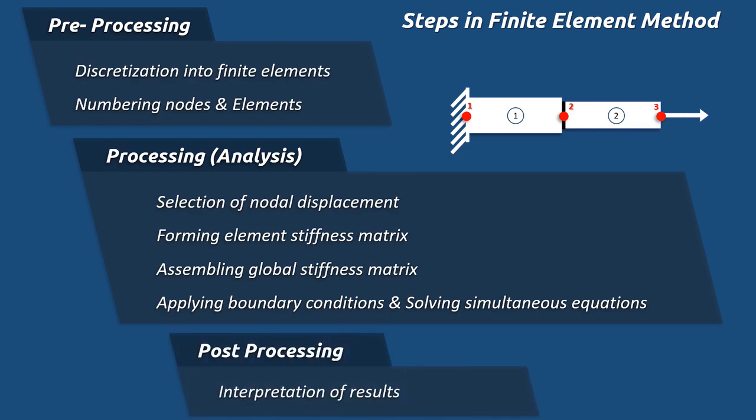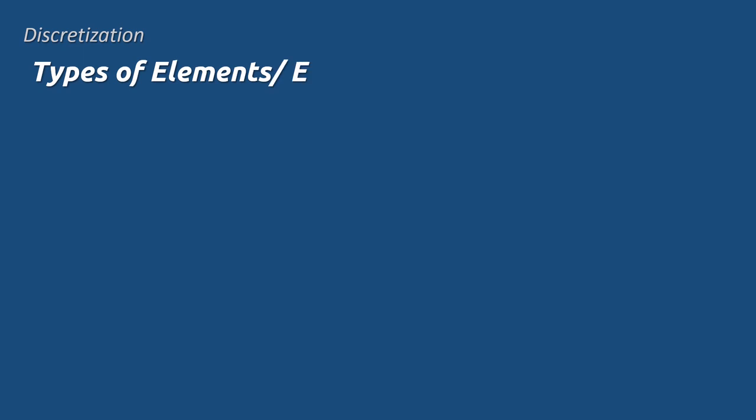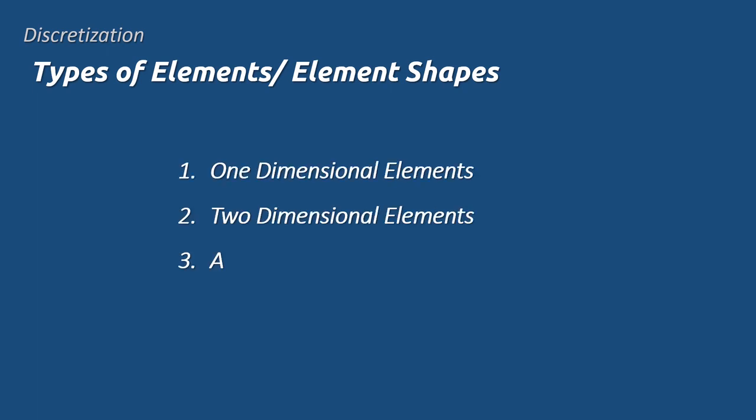The post-process phase consists of interpolation or approximation of the results. In discretization, the type and shape of the individual elements are decided based on the geometry and nature of the analysis. The major types of the elements are one-dimensional elements, two-dimensional elements, axis-symmetric elements, and three-dimensional elements.